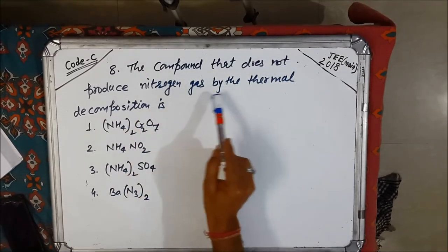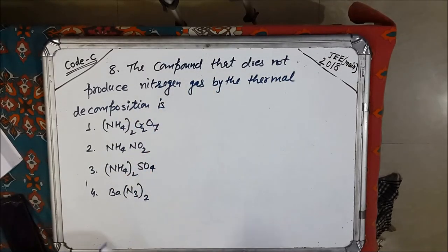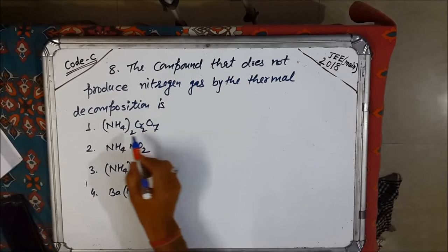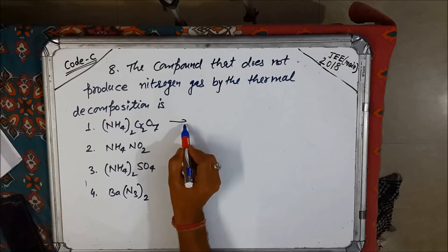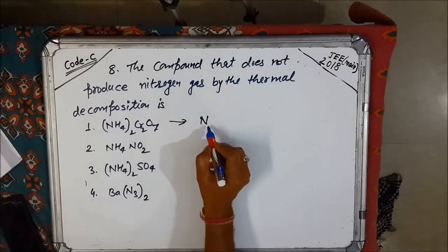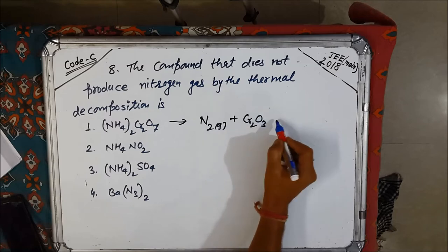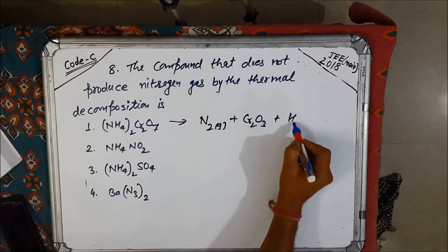The compound that does not produce nitrogen gas by thermal decomposition. This is a very easy question from NCERT. You know in thermal decomposition of ammonium dichromate we get nitrogen gas, Cr2O3 along with H2O.